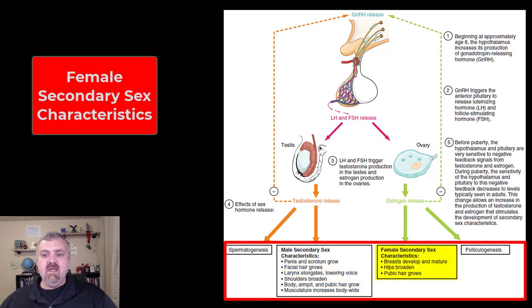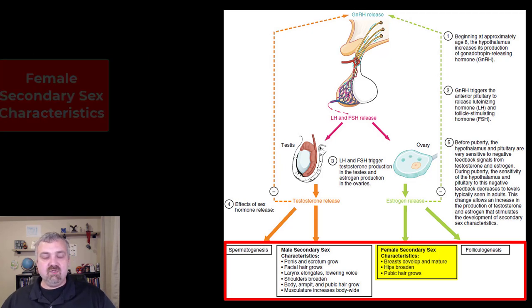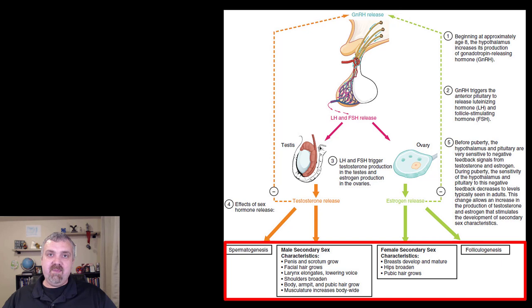Female secondary sexual characteristics are going to be the breasts will start to develop and mature, the hips will broaden. So the female pelvis is broader to make way for the birth canal for the baby, and then pubic hair growth. So you're going to see different secondary sexual characteristics. Of course, we've got a spectrum here and there's different growth patterns. So some men are going to have a lot more body hair than other men and vice versa, the same thing with women. But that's going to be the secondary sexual characteristics that develop because of these sex hormones.